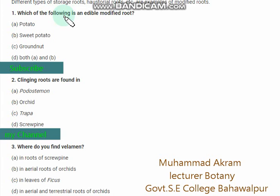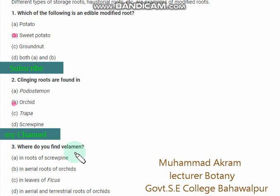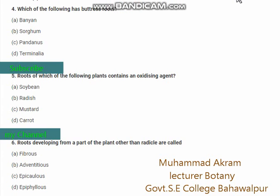The cambial tissue of Pinus radiata has cytokinin. Which of the following is an edible modified root? Sweet potato. Cleansing roots are found in orchids. Velamen is found in aerial roots of orchids — the right option is option B. Which of the following has buttress roots? The right option is Terminalia — option D.